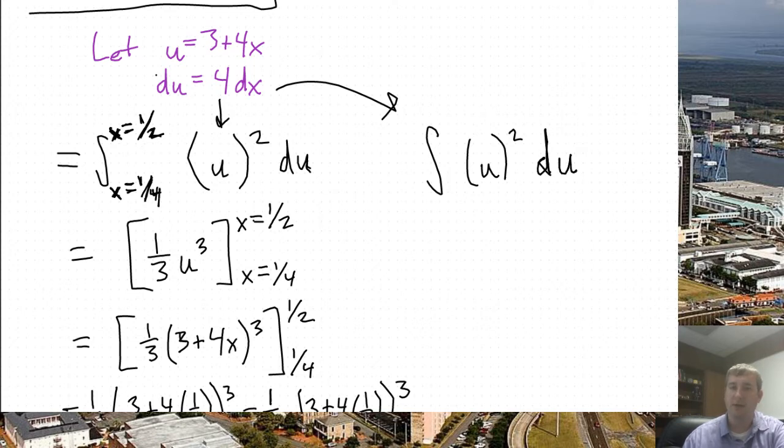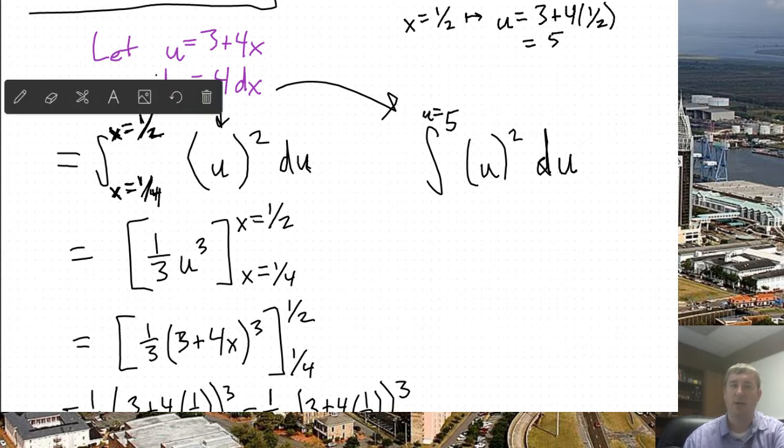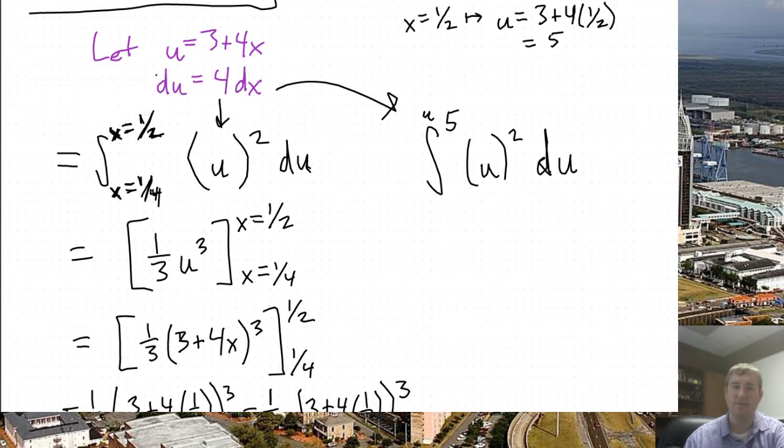So if x is equal to 1/2, I'll do the top first, then what would my u value be? Well, u is equal to 3 plus 4 times x. And my x is 1/2 here, so that means I get 3 plus 2 is 5. So I'll write a 5 on the top here for my u value. You can even write u equals 5 if you wish, but you don't have to. In context, it's obvious that it's the u because that's the variable of differentiation given by the du.